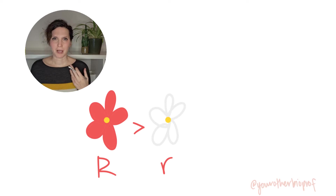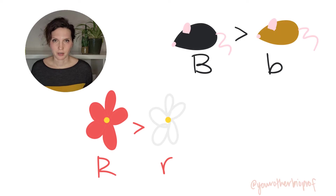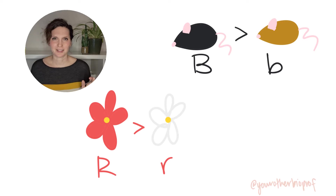So you've got your flower colors or your mouse coat colors or whatever, and you're working your Punnett square and you get it: big A is dominant over little a. But why?